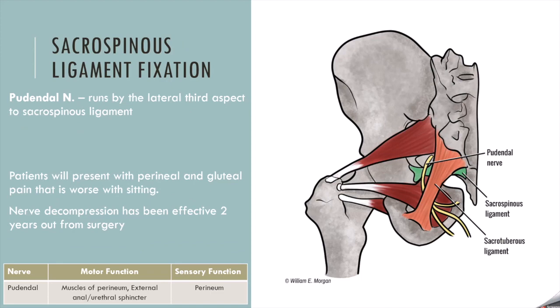Sacrospinous ligament fixation is the next procedure. This is common for urinary incontinence procedures. The nerve we're worried about here is the pudendal nerve, which runs on the lateral third aspect of the sacrospinous ligament, colored in green in the picture. The pudendal nerve exits the sciatic foramen, and if it's affected, you can have perineal and vulvar pain, noted to be worse when sitting. Like the obturator nerve in the previous example, you can decompress this nerve even two years post-op and still get beneficial outcomes.